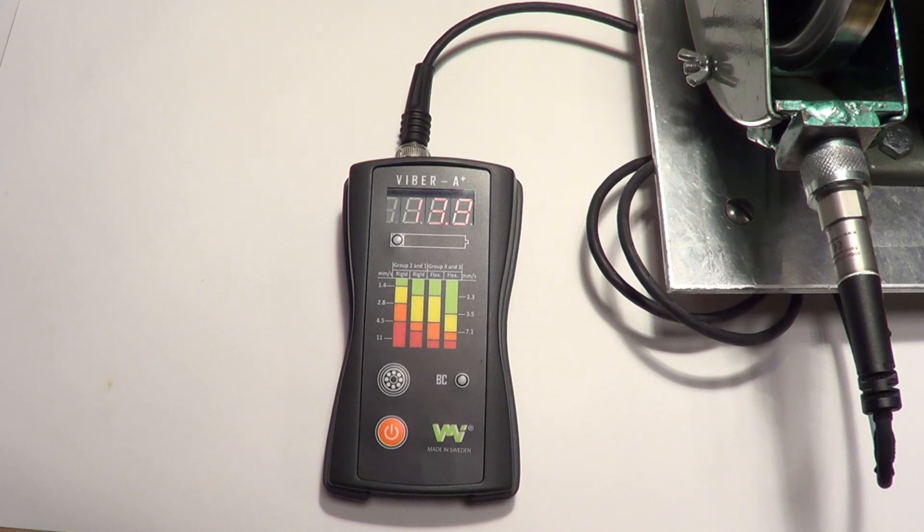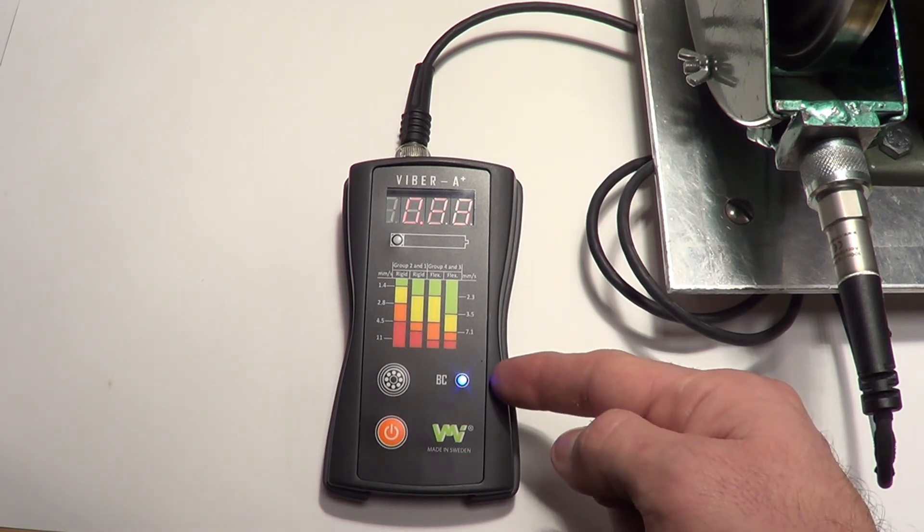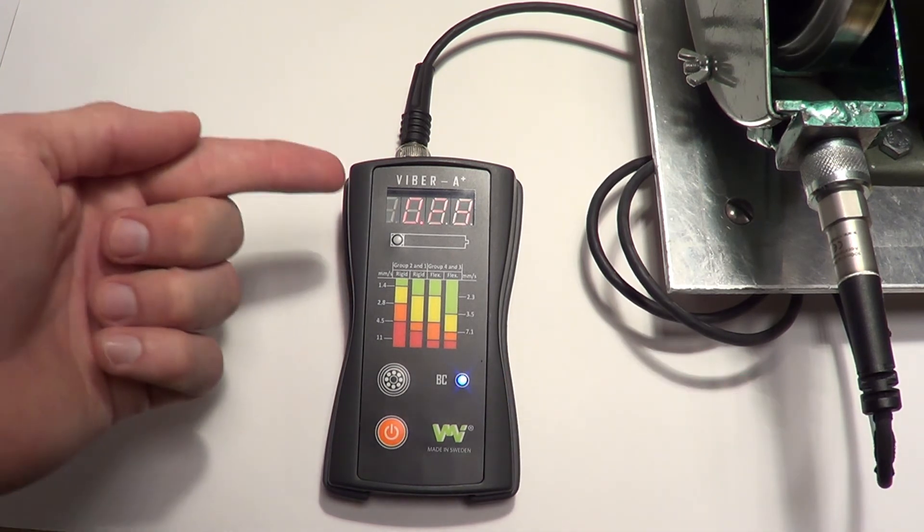To take a reading, simply press the bearing condition button, and hold the accelerometer onto the bearing the same way as for vibration measurements. The blue BC LED will light, and the digital display will give you a measurement.